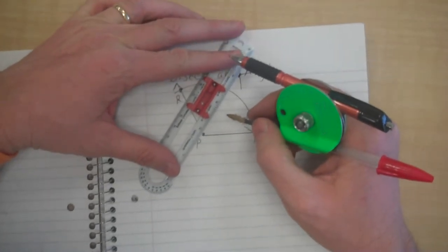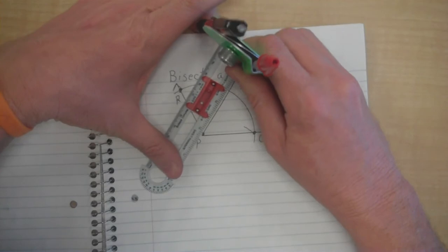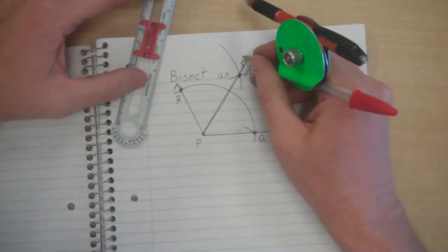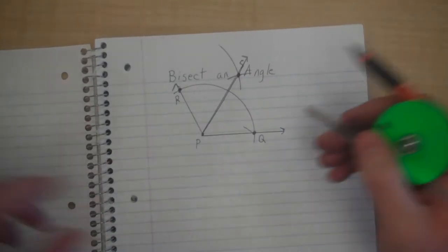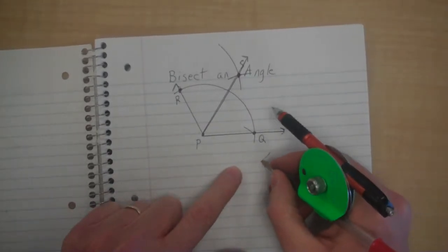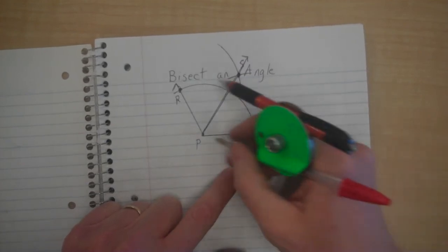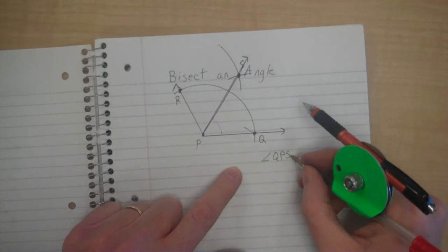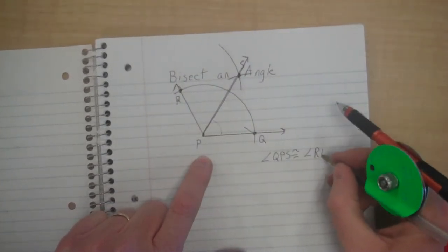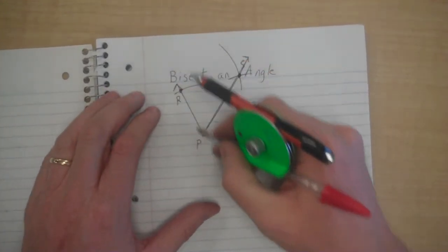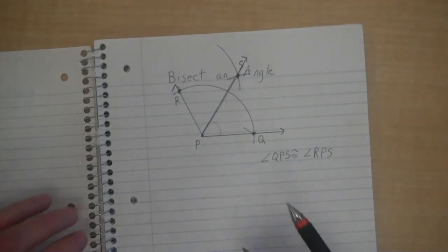Next thing I do is I draw this ray. And voila! Angle QPS, this angle right here, is congruent to angle RPS. Which means I have split the big angle into two equal angles. And that's how you bisect an angle.